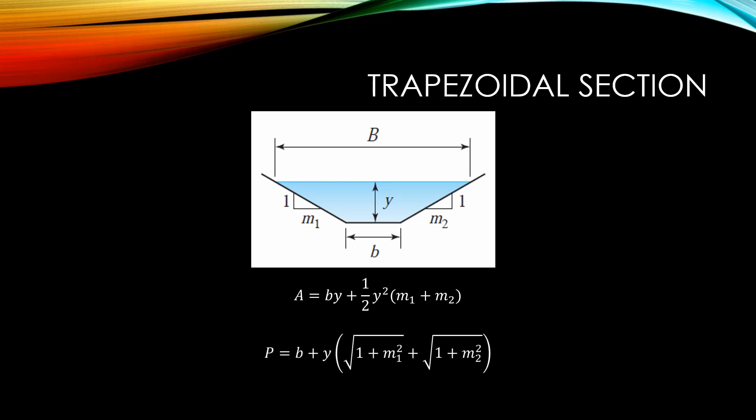The wetted perimeter of a trapezoidal section is taken by adding the width of the base to the length of the diagonal sections. The length of the diagonal sections can be found by applying the Pythagorean theorem.